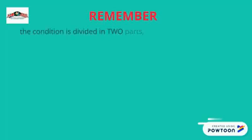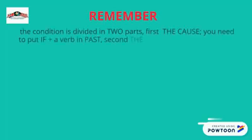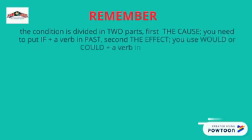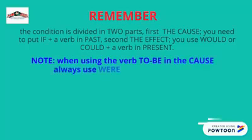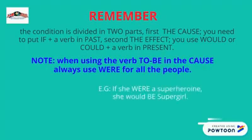Remember, the condition is divided into parts. First, the cause: you need to put 'if' plus a verb in the past. Second, the effect: you use 'would' or 'could' plus a verb in the present. Note: when using the verb 'to be' in the cause, always use 'were' for all persons.